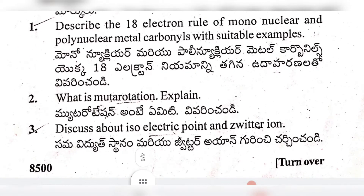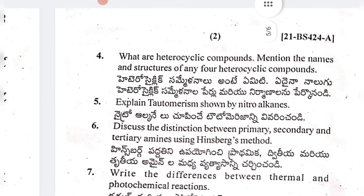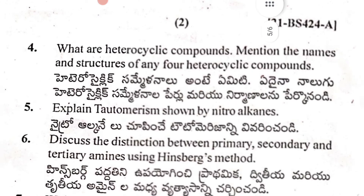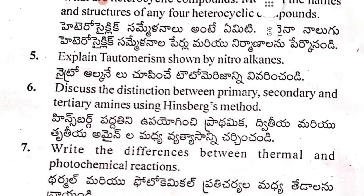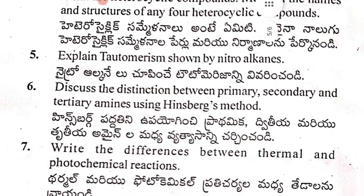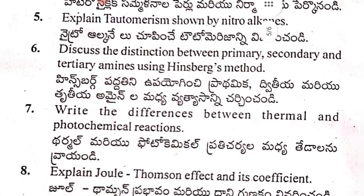Fourth question: what are heterocyclic compounds? Mention the names and structures of any four heterocyclic compounds. Fifth: explain tautomerism shown by nitroalkanes. Sixth: discuss the distinction between primary, secondary, and tertiary amines using the Heinsberg method.